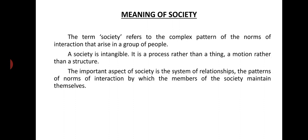The term society refers to the complex pattern of the norms of interaction that arise in a group of people. A society is intangible — it is a process rather than a thing, a motion rather than a structure. The important aspect of society is the system of relationships, the patterns of the norms of interaction by which the members of the society maintain themselves.